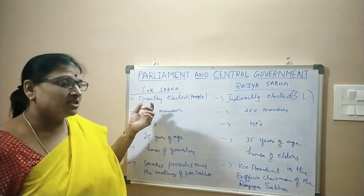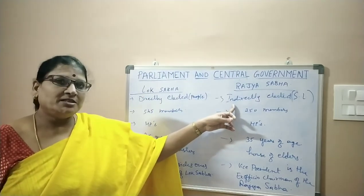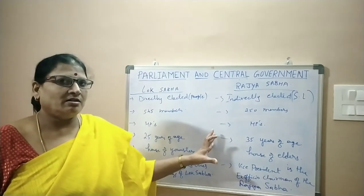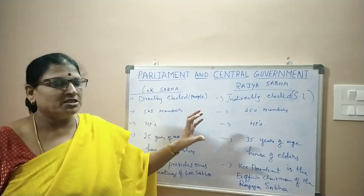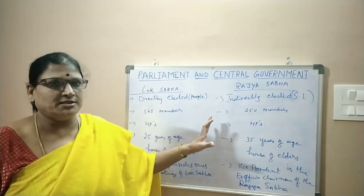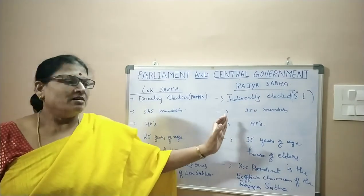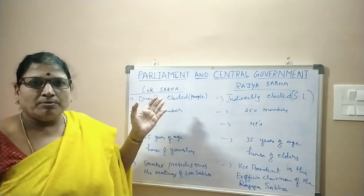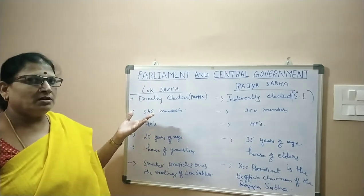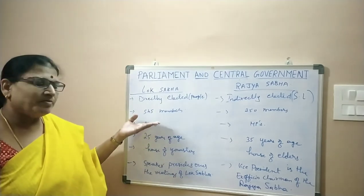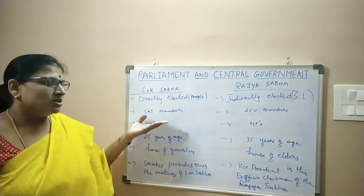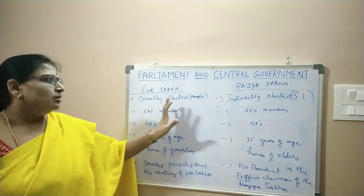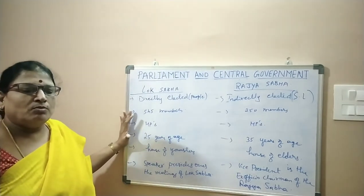The term of office for Lok Sabha members is 5 years, and the term of office for Rajya Sabha is 6 years. For every 2 years, one-third of its members retire and elections are conducted to fill those seats. So the term of office of Rajya Sabha members is 6 years. When we compare the two houses in terms of policies or bills passed, Lok Sabha is the most powerful house because it has more number of members. From the Lok Sabha, the ruling party will have majority, so compared to Rajya Sabha, Lok Sabha is the most powerful house.